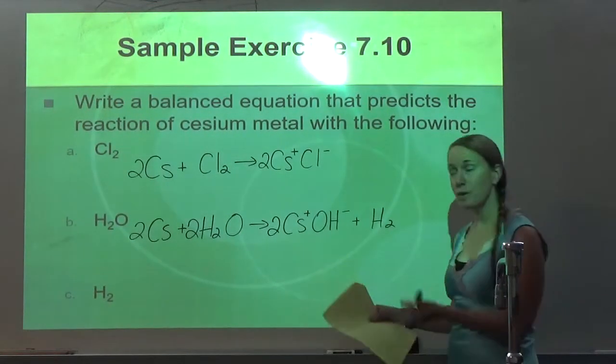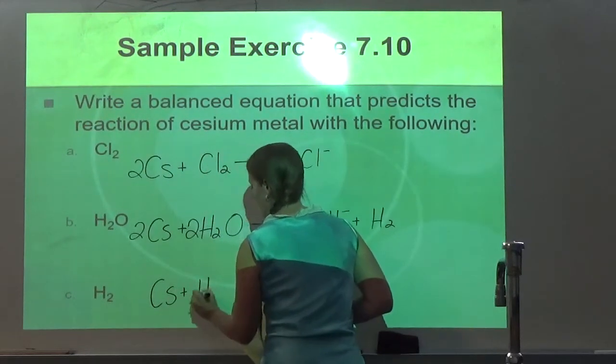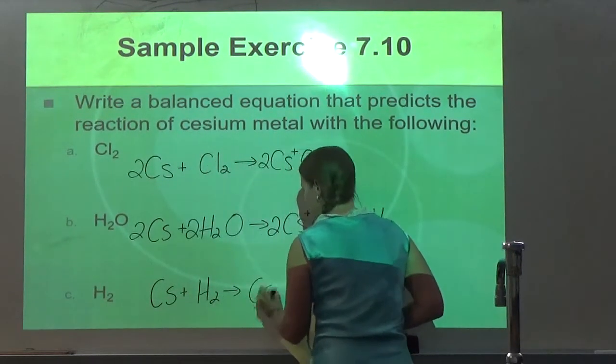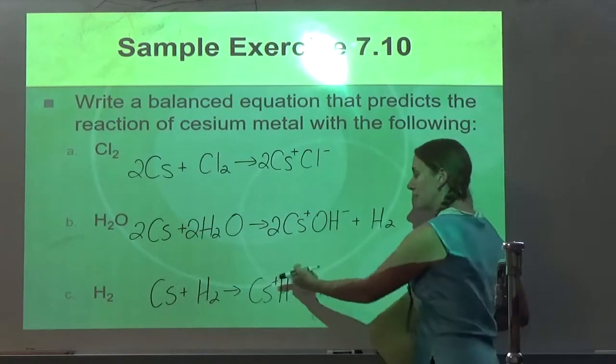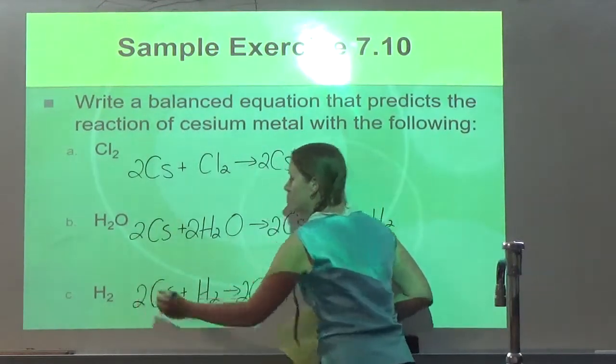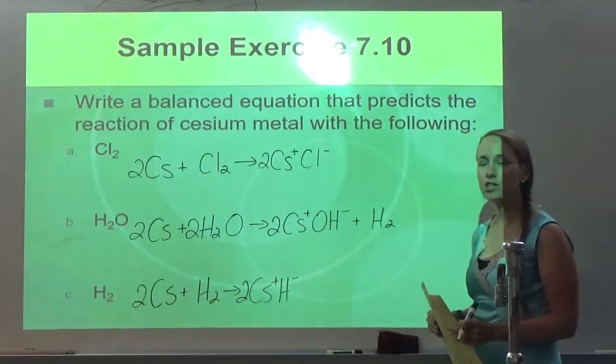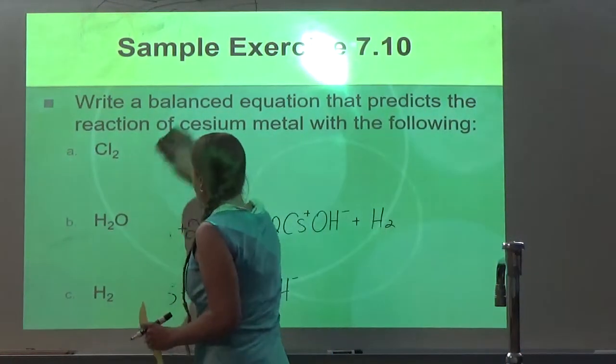And then last is with hydrogen. So remember I told you it's going to make a hydride. So Cs is positive 1. Hydride is H negative 1. So I don't need to balance my charges. But since I have 2 H's, I put a 2 here. And now I have 2 Cs, so I put a 2 right there, just like that. Hopefully that wasn't too bad.